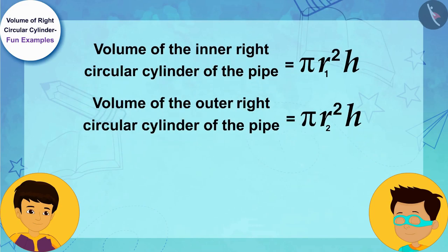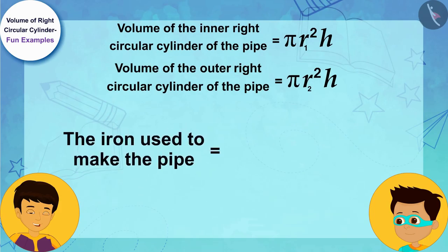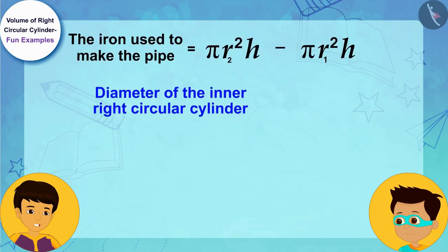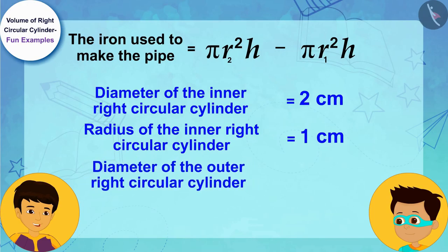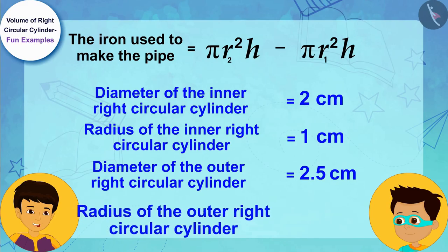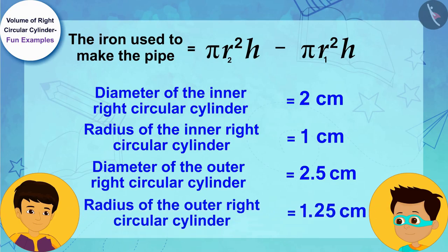As I told you earlier, the iron used to make the pipe is equal to the difference between the volumes of its outer and inner right circular cylinders. The diameter of the inner right circular cylinder part of the pipe is 2 cm. That is, its radius will be 1 cm. And the diameter of the outer right circular cylinder portion of the pipe is 2.5 cm. This means its radius will be 1.25 cm.